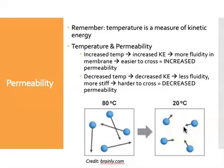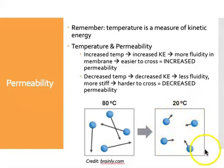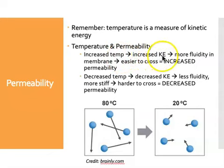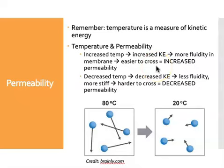In comparison, the molecules at 20°C are moving much less — still moving, since all molecules are in motion above absolute zero, but the shortened arrow lengths reflect lower kinetic energy and fewer collisions with the walls. As it relates to the membrane, higher temperature increases the kinetic energy of molecules in the membrane, creating more fluidity. Things are moving and vibrating more, making the membrane easier to cross — in other words, at higher temperatures membranes have increased permeability.